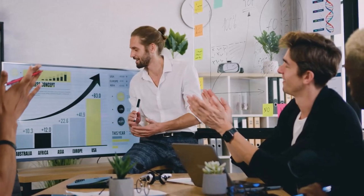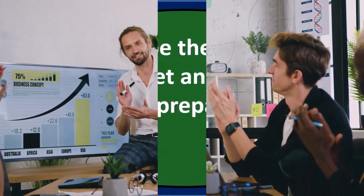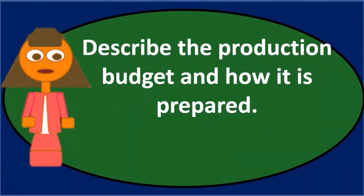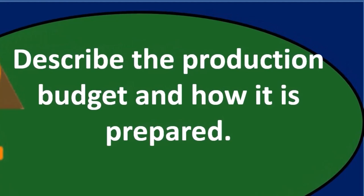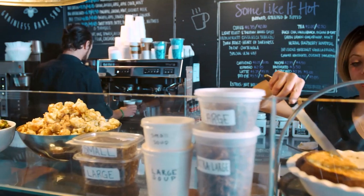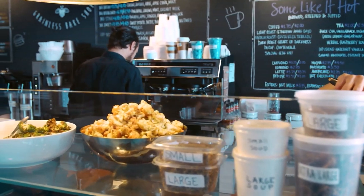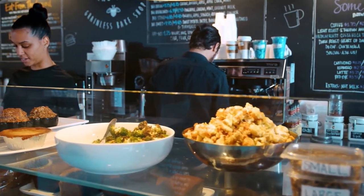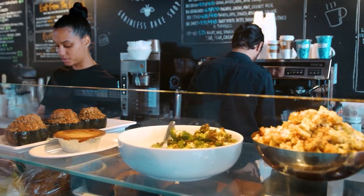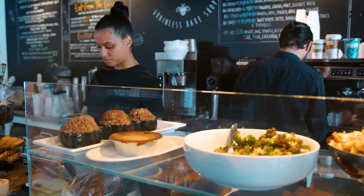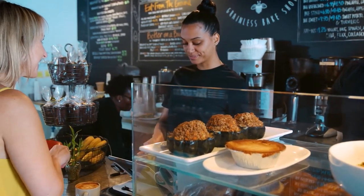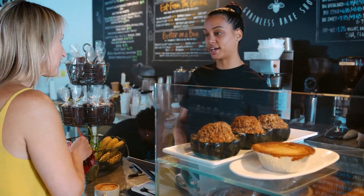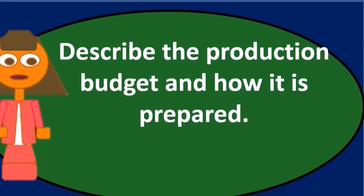Those two numbers are not going to be the same necessarily. We need the sales budget because we need to know how much we're going to sell in order to know how many we're going to produce. However, we're not going to produce the same amount that we sell, because we may have a beginning inventory — units already there from the prior time period — and we want to give some leeway in case our sales are higher than we expect. So we probably want to produce some more.